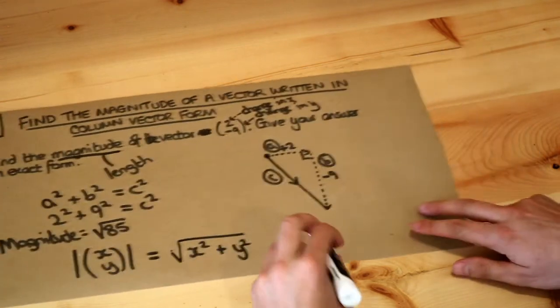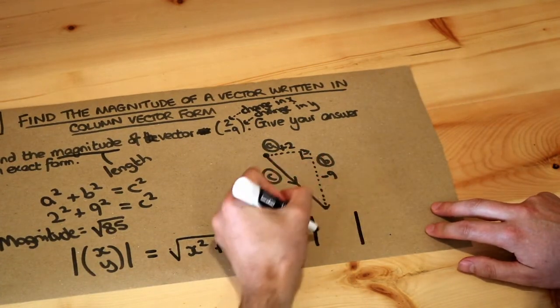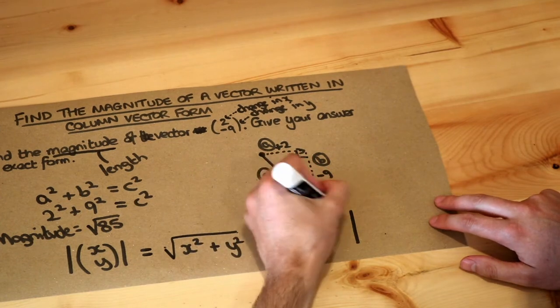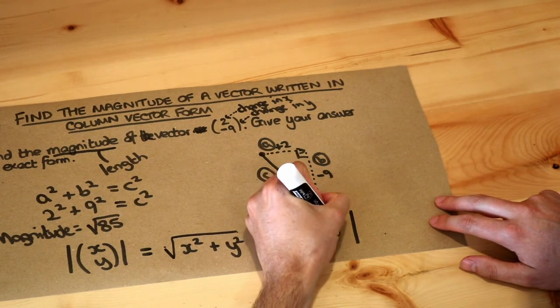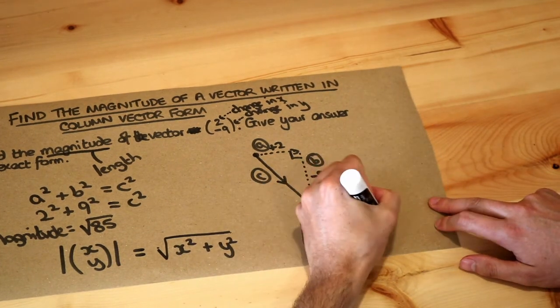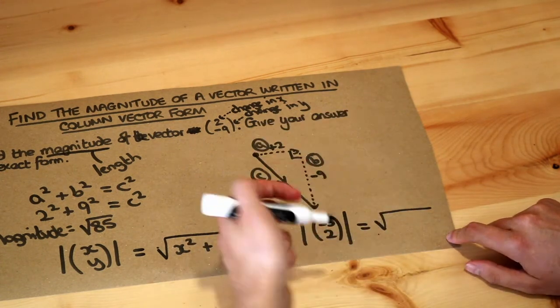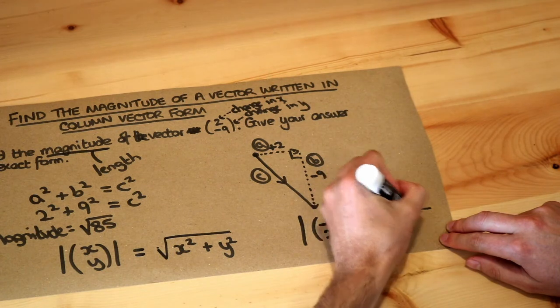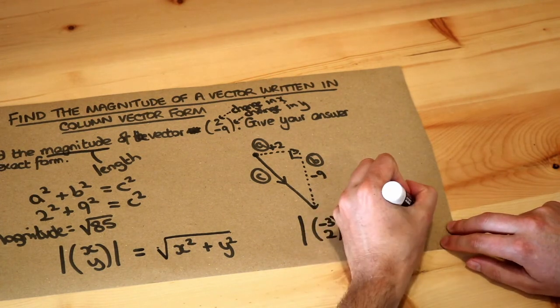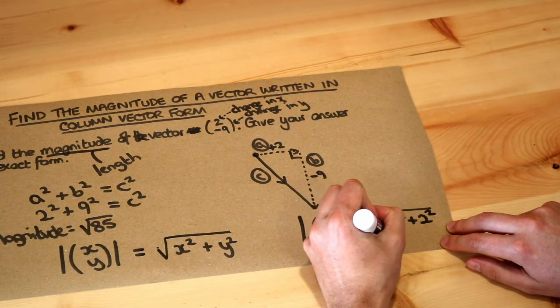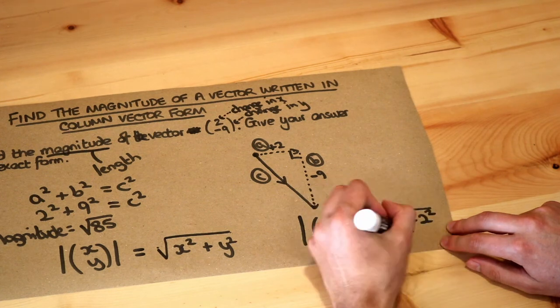So just one more quick example. If I want to find the magnitude of the vector say minus 3, 2, then I just do the square root of minus 3 squared, but to be honest minus 3 squared is the same as 3 squared, so I might as well write it as a positive number, plus 2 squared. And that would be the square root of 9 plus 4, which is 13.